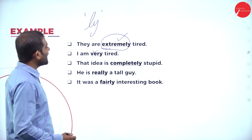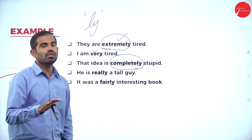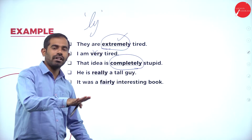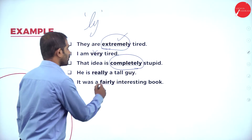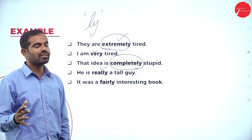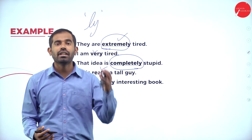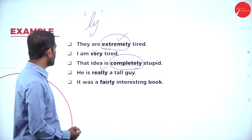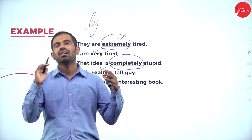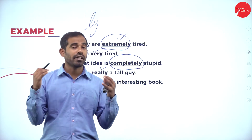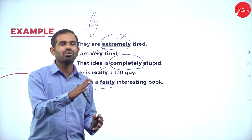'The idea is completely stupid' — completely shows the in-depth level of intensity. 'He's really a tall guy' — really conveys that he truly is tall. 'It was a fairly interesting book' — fairly suggests an average level of interest, not very high. Out of five, I would rate it about two to two point five. So fairly indicates a moderate degree.